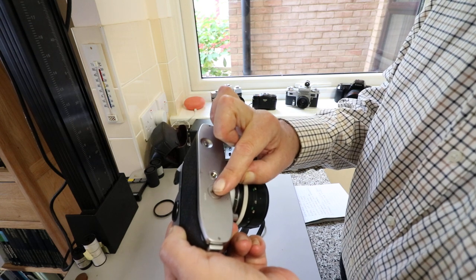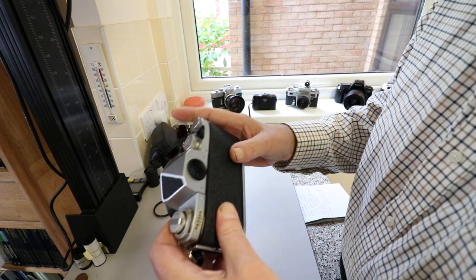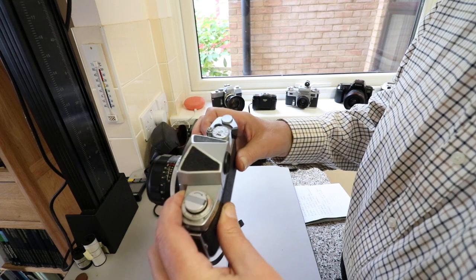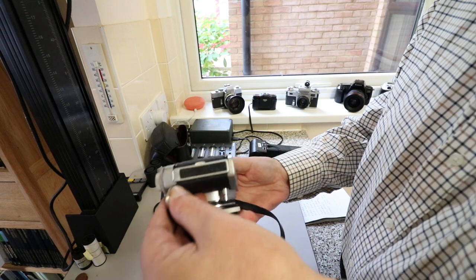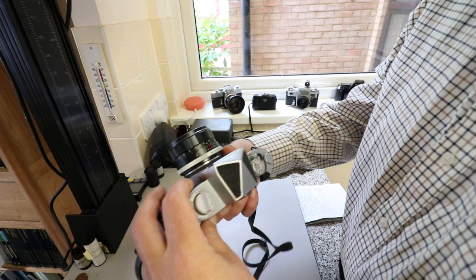The battery only powers the meter. This is a mechanical shuttered camera with no automation. It's a completely manual camera.